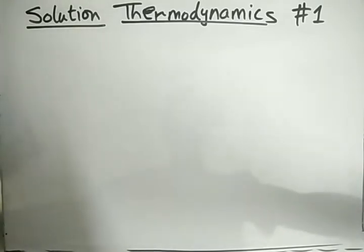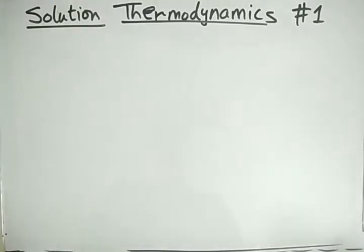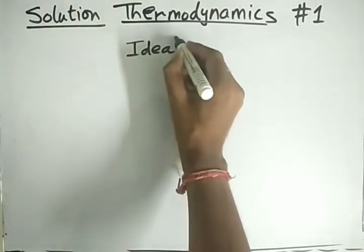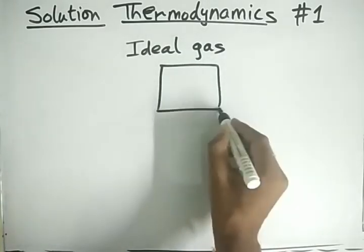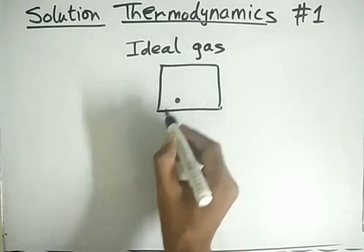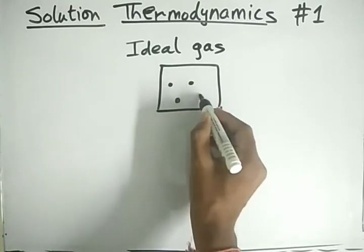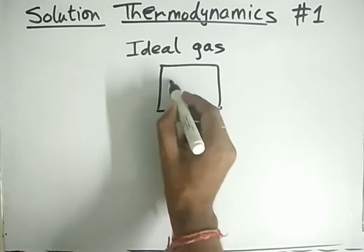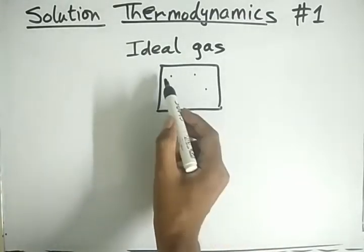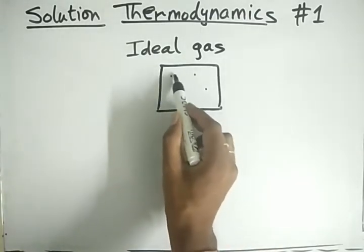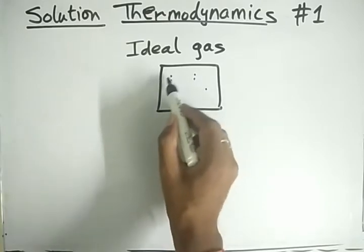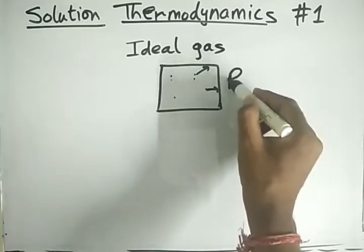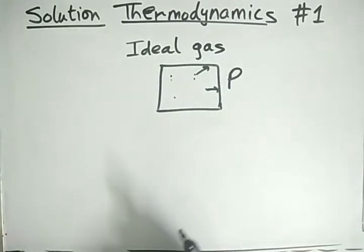Starting off with part one: earlier people had the idea about ideal gas. An ideal gas is a gas that has almost negligible molecular volume — the molecules are very very negligible in size compared to the whole container. They have zero interactions between them, and what they do is strike the wall and create a pressure P.